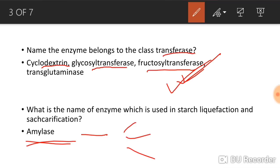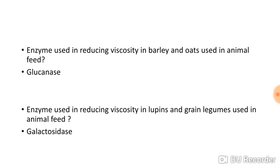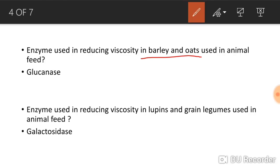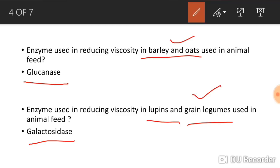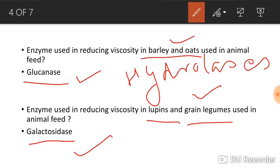The next question: enzyme used in reducing viscosity in barley and oats (used in animal feed) is glucanase. The enzyme used in reducing viscosity in lupins and grain legumes is galactosidase. Both glucanase and galactosidase belong to the same class, which is hydrolysis.